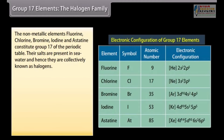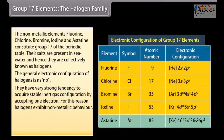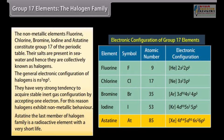The non-metallic elements fluorine, chlorine, bromine, iodine and astatine constitute group 17 of the periodic table. Their salts are present in seawater and hence they are collectively known as halogens. The general electronic configuration of halogens is NS²NP⁵. They have a very strong tendency to acquire stable inert gas configuration by accepting one electron, and for this reason halogens exhibit non-metallic behavior. Astatine, the last member of the halogen family, is a radioactive element with a very short life.